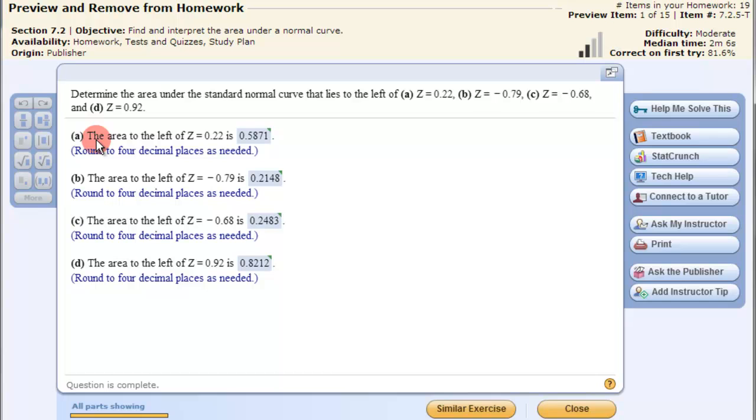Let's look at this example first. It says determine the area under the standard normal curve that lies to the left of - let's do the first one - the area to the left of Z equals 0.22.